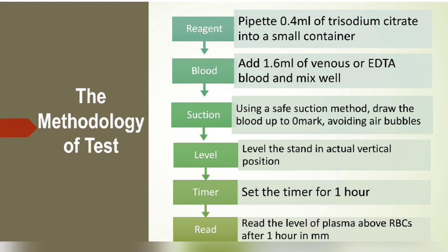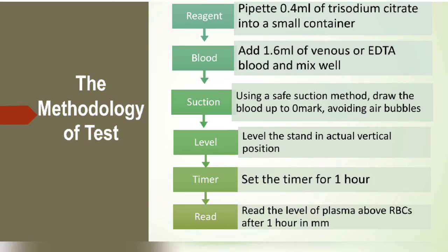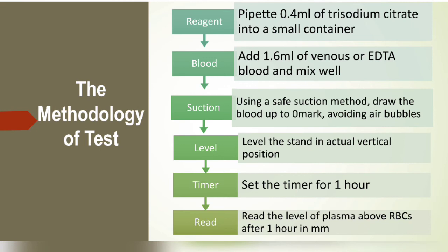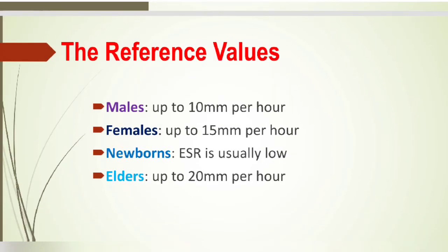Methodology: add 0.4 ml of trisodium citrate reagent and 1.6 ml of venous or EDTA blood, then mix well. Suction the mixture using a rubber teat and fill the Westergren pipette up to the zero mark, avoiding any air bubbles. Level the stand in an exact vertical position. Set the timer for one hour, then read the level of plasma above the RBCs at exactly one hour. Steps in order: reagent first, then add blood, then suction, then level the stand, set the timer, then read the results.